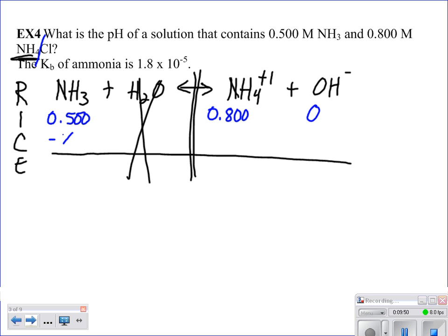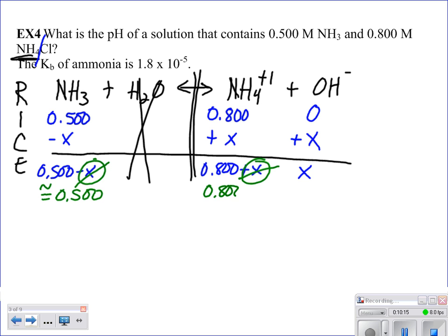So we're going to subtract x from the left, add to the right, which gives us this. And those x's are really tiny. So what this means is we've got 0.5 on the left. Here we've got 0.8. And here we have x.